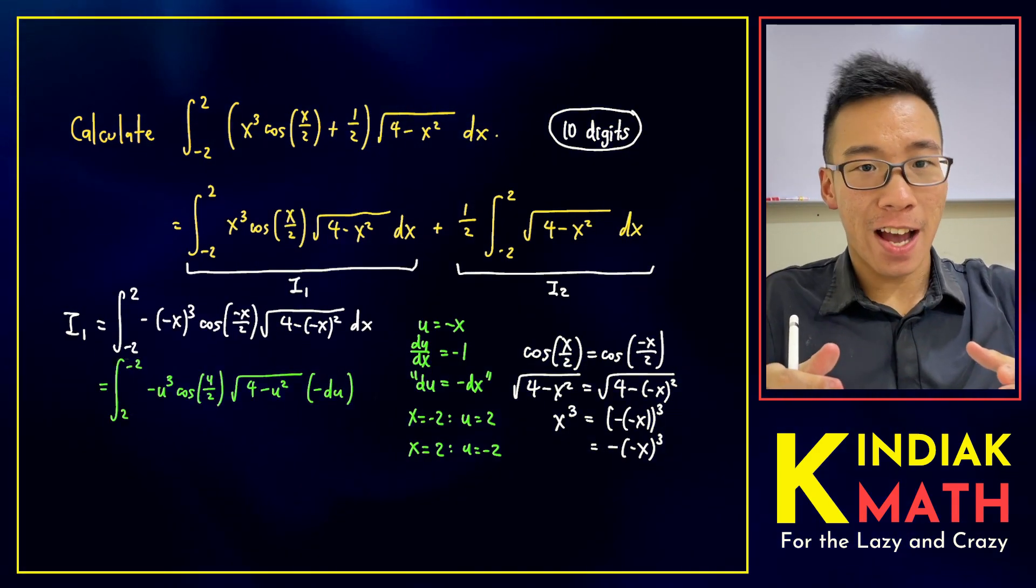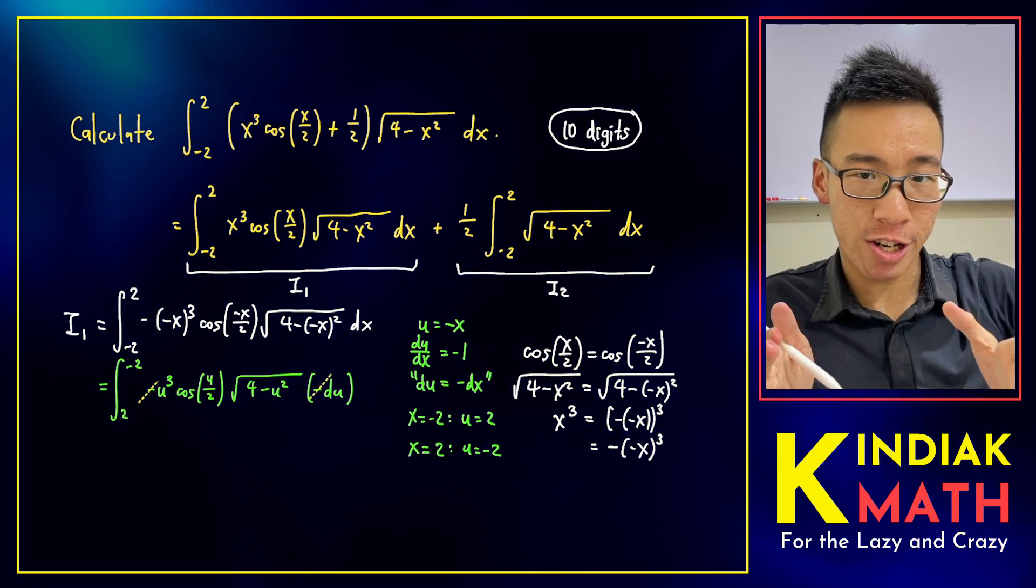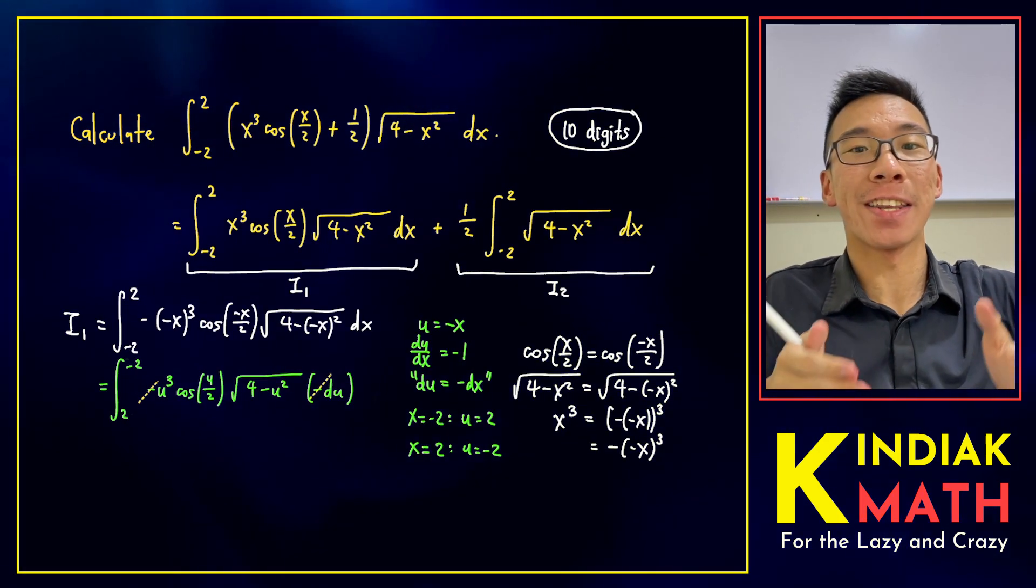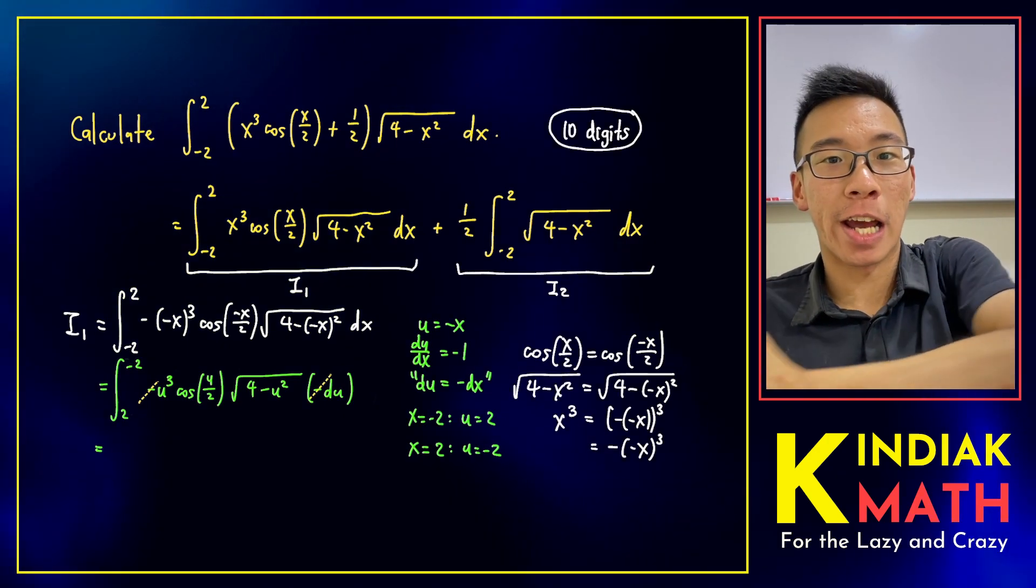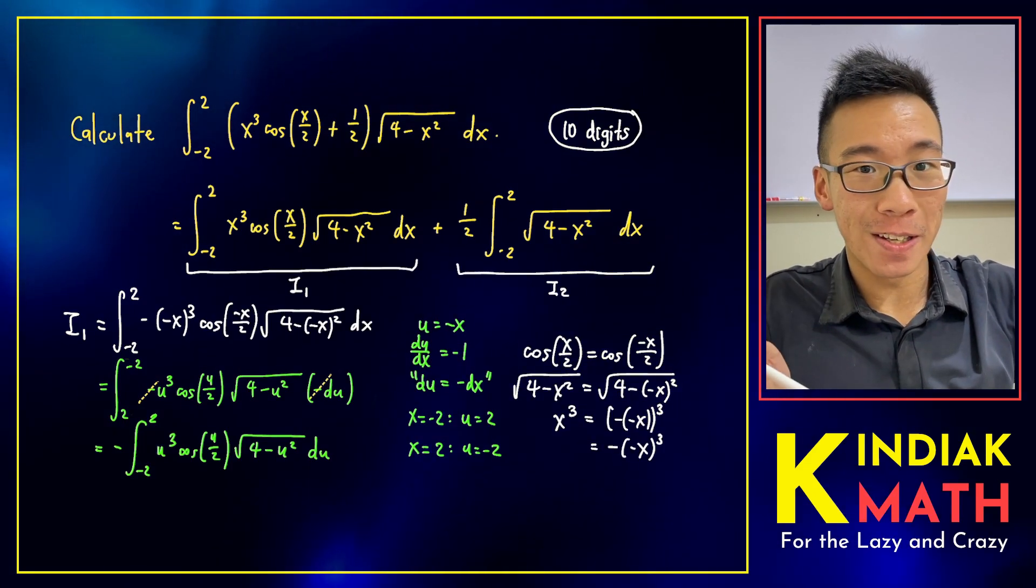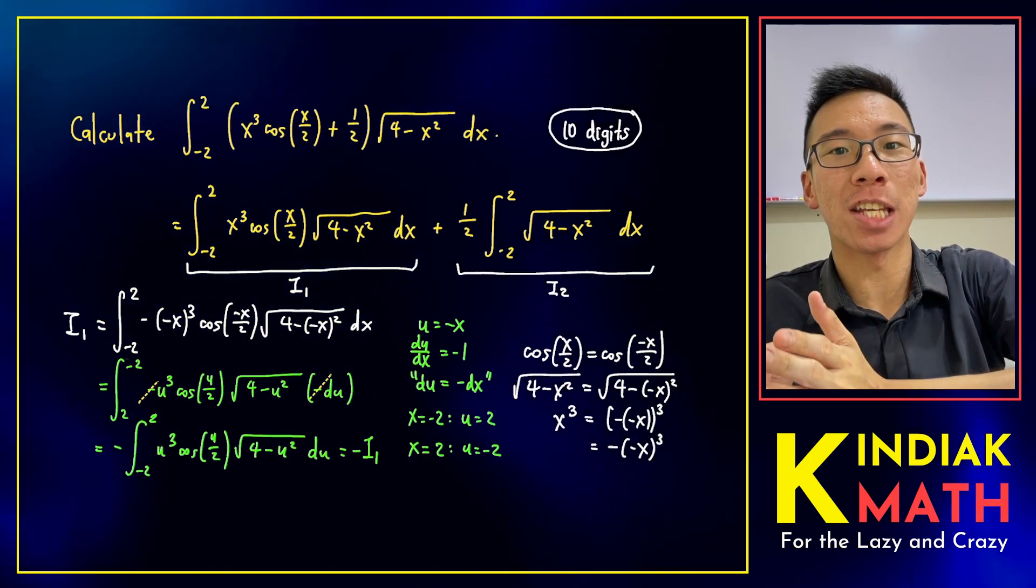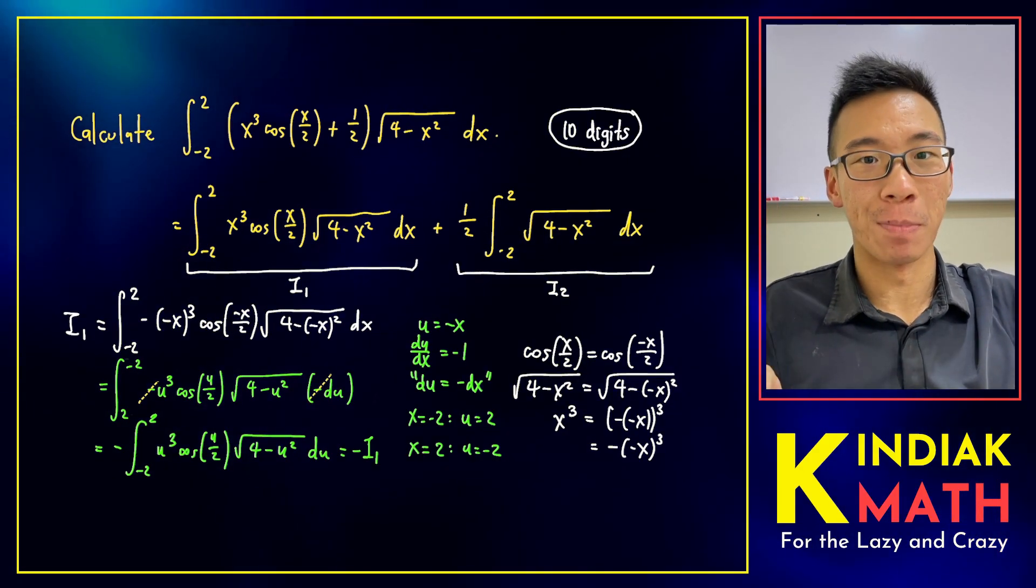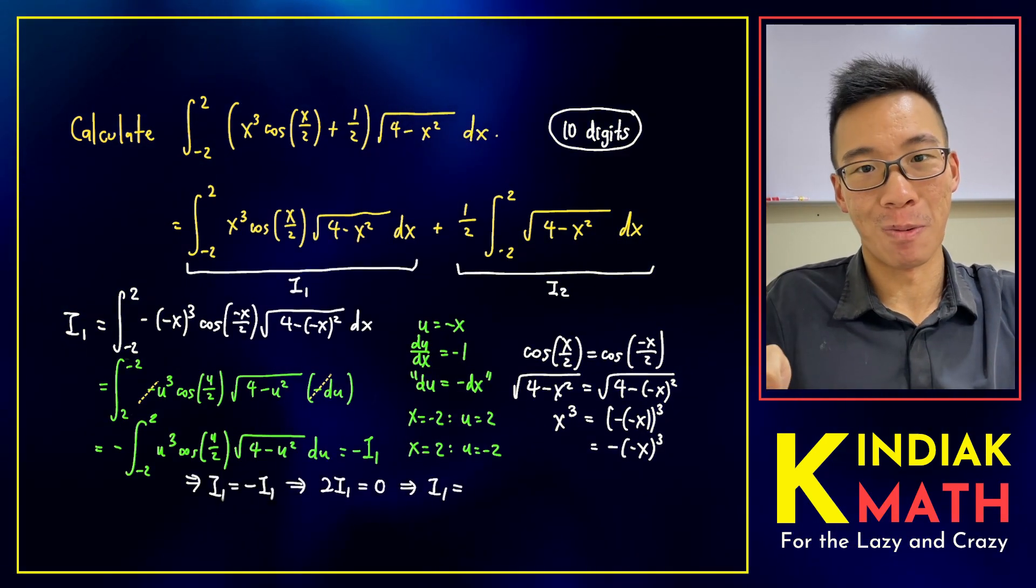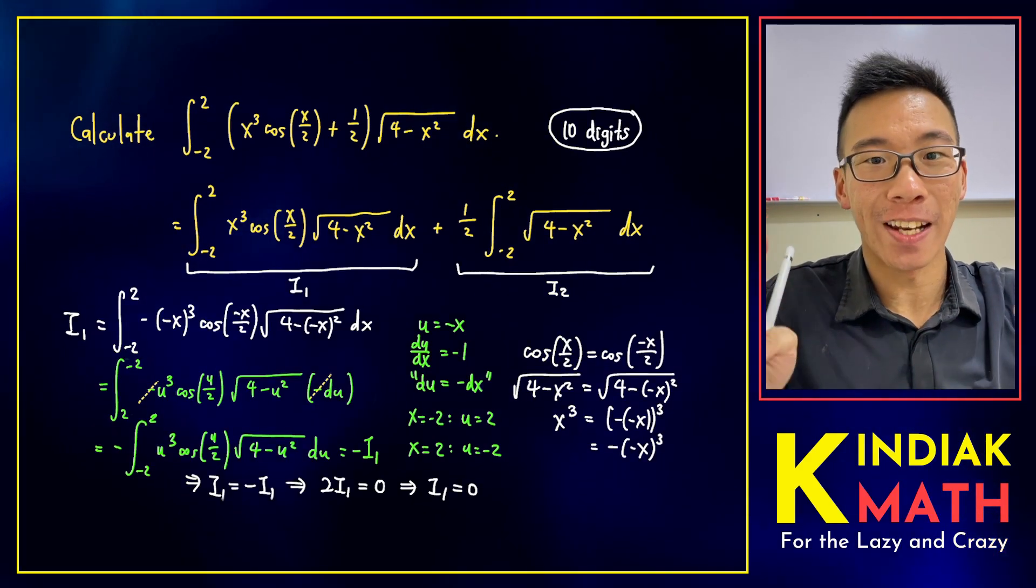The negative signs cancel out, and we are left with basically the same expression, except that the limits have been flipped. Putting a negative sign in front can help us unflip the limits, and what remains is simply the negative of i1. So we have a situation where i1 equals its negative. There's only one real number in which that works. i1 must equal to 0. The first integral, as long and complicated as it may be, is simply 0.